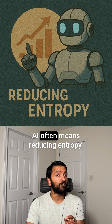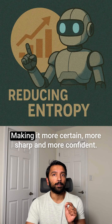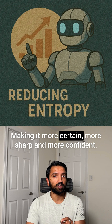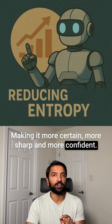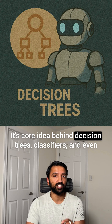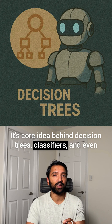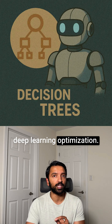Training AI often means reducing entropy — making it more certain, more sharp, and more confident. It's a core idea behind decision trees, classifiers, and even deep learning optimization.